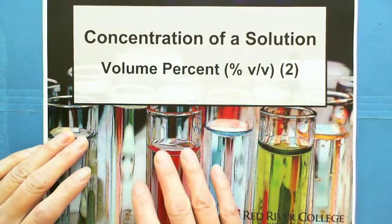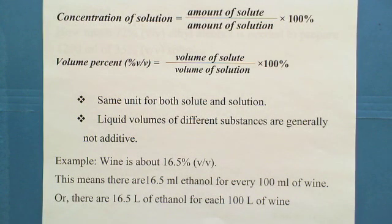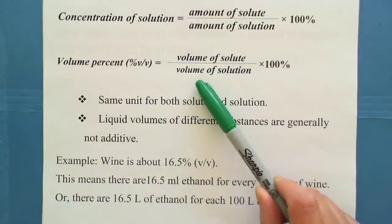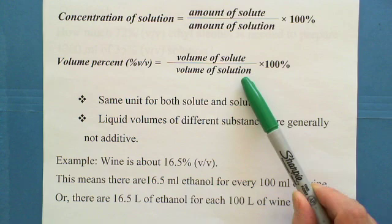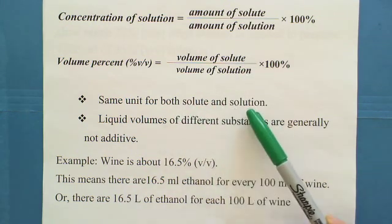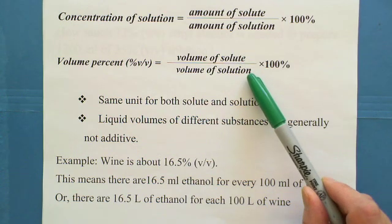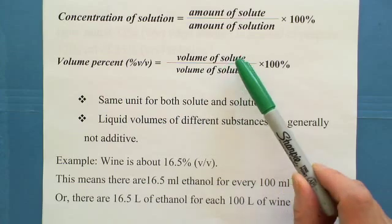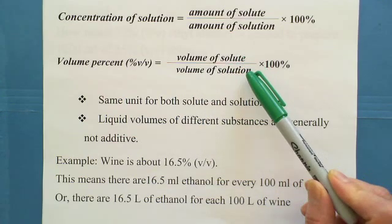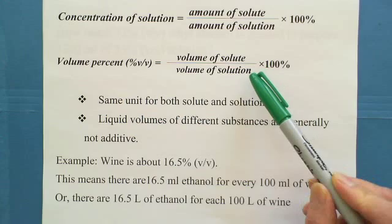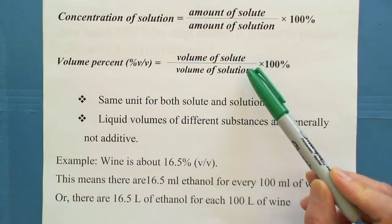In Volume Percent 1, we already have the definition of concentration expressed as volume percent, which is volume of solute divided by volume of solution. Both volumes need the same unit because if volume of solute is milliliters, solution has to be milliliters. This kind of concentration, the solute is liquid. So milliliters over milliliters or liters over liters.